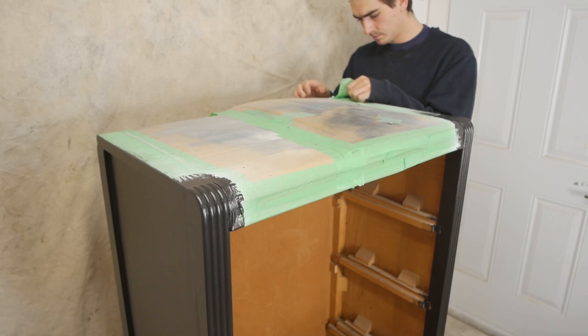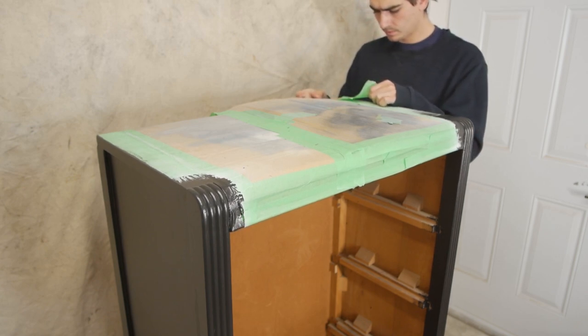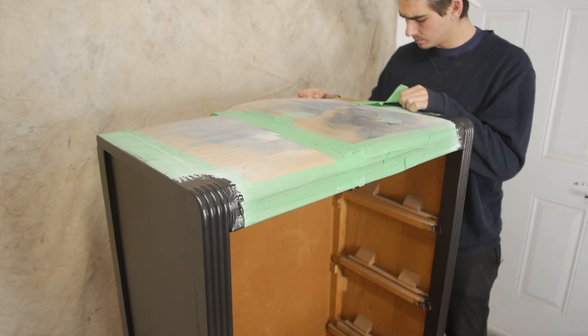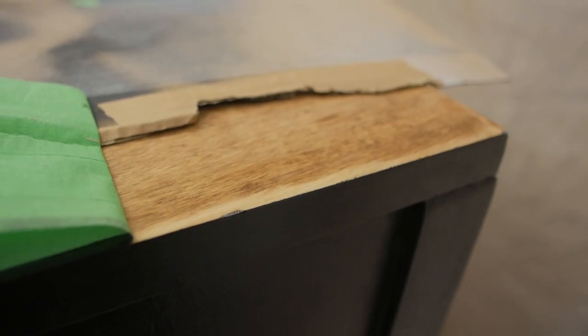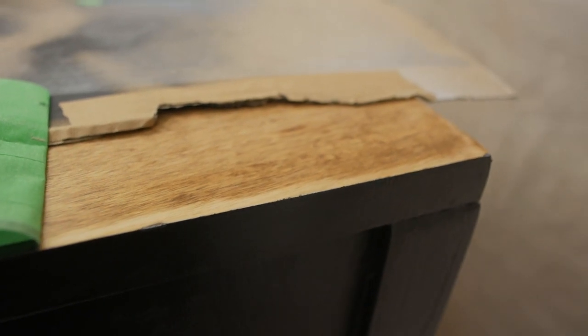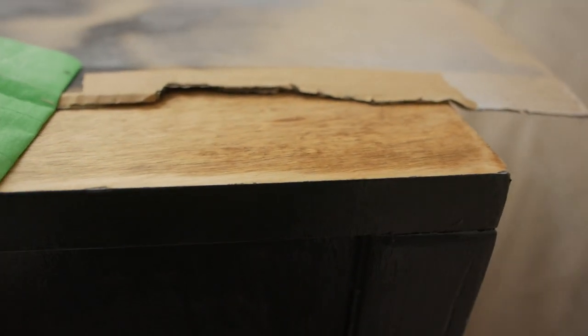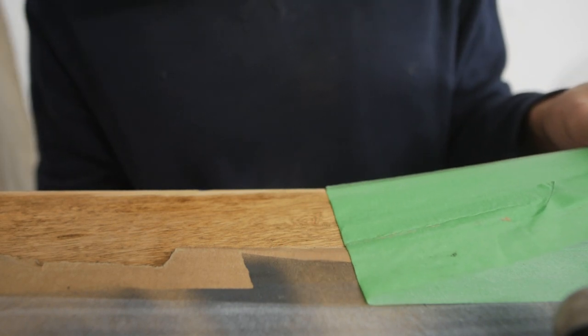Now it's time to remove this tape and cardboard covering the top so we can get staining and finishing off this project. The tape did a pretty good job keeping the black paint off, but I usually just grab a piece of sandpaper and sand down the corner one more time.